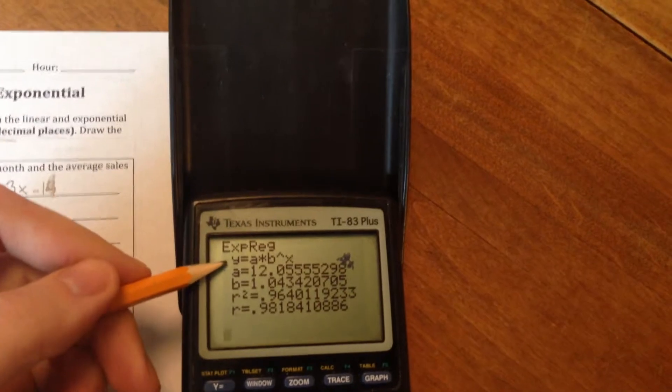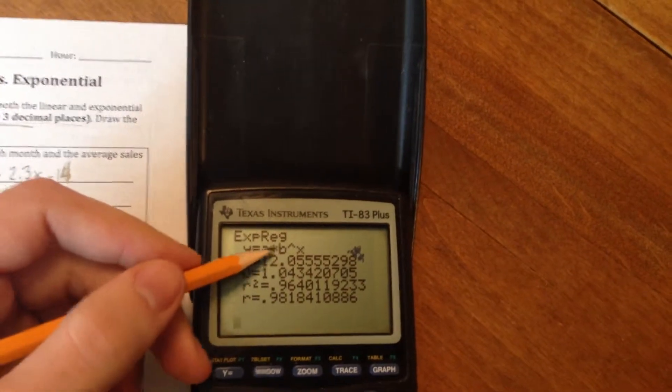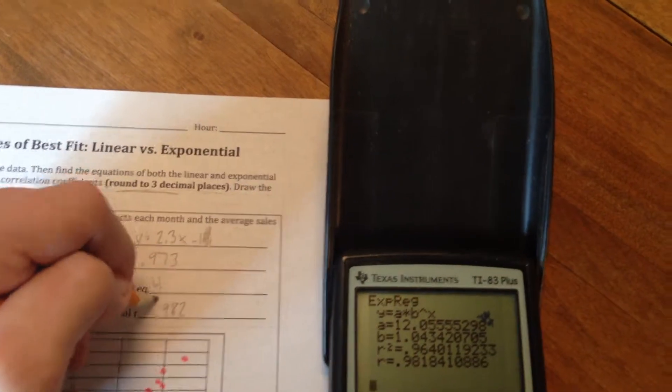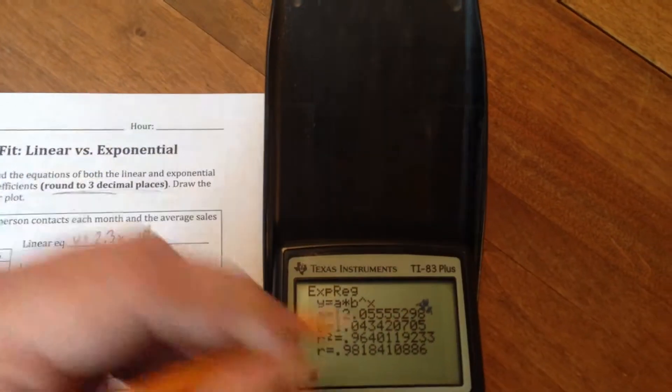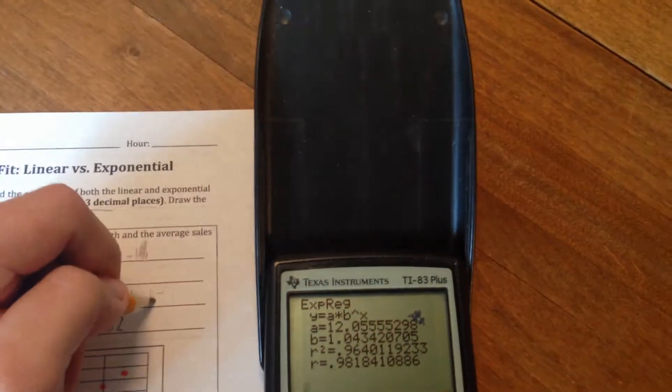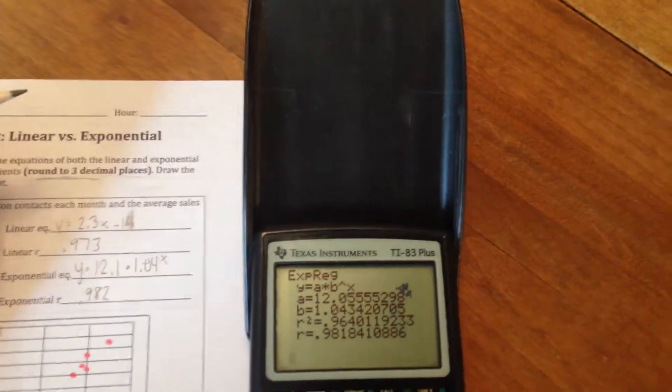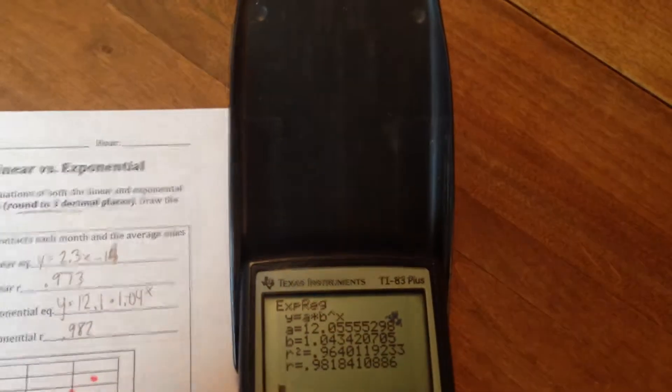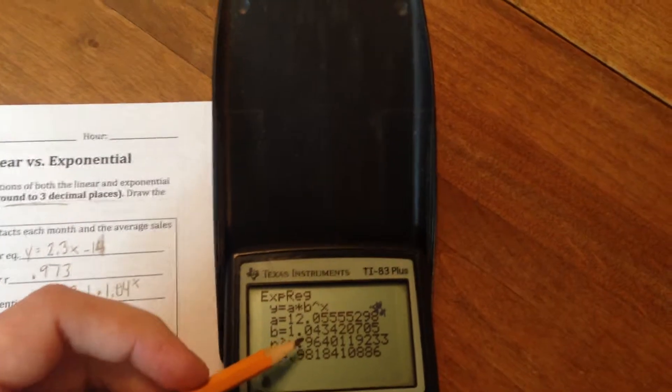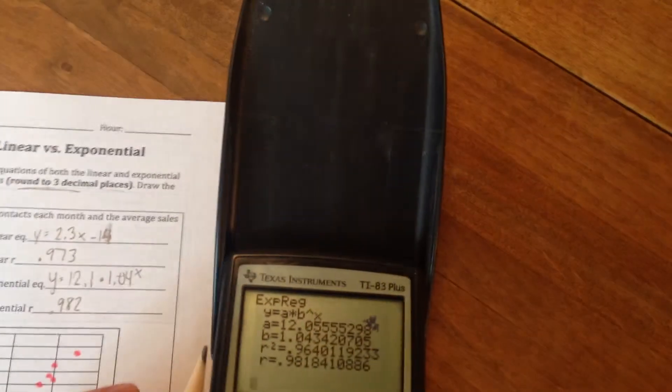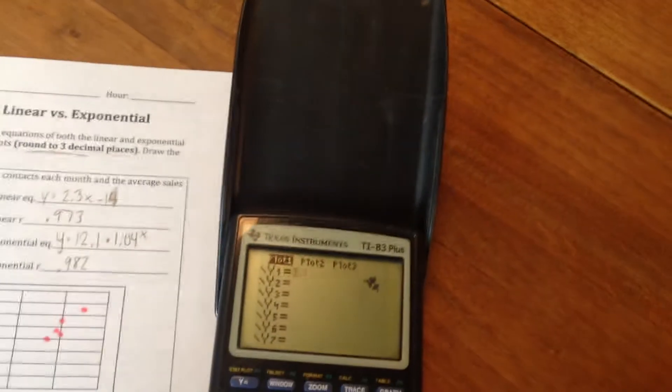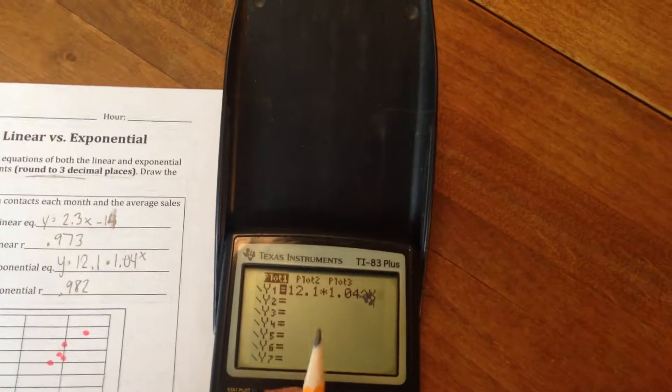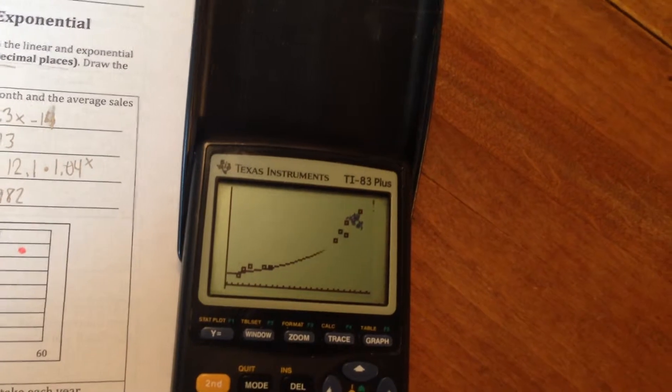And now, this time, remember, the exponential equations look different than a linear equation. It's going to look like some number times some number to the X power. So in this case, we're going to have 12.1, I'll say. So Y equals 12.1 times 1.04 to the X power. Now, you might be tempted to just round this to a 1. And I understand that. I think I even did that on the answer key. But I'm going to show you in a graph the difference between having this 0.04 versus just having a plain 1 in there. So let's go back to our graph. I'm going to erase that old equation. And let's type in the new one. 12.1 times 1.04 raised to the X power.